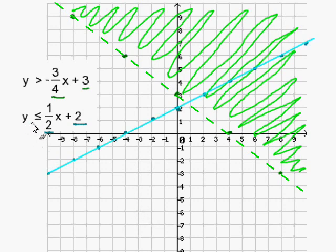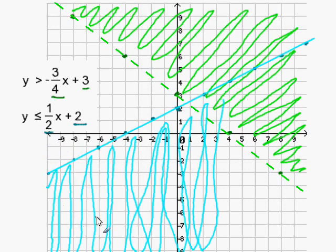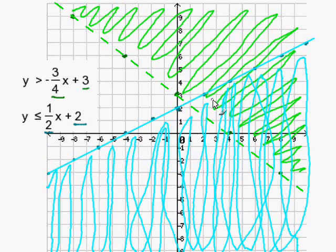Now this is y is less than or equal to. That means since y is less than or equal to, I have to shade at the bottom of the line. And now I've graphed my two inequalities, and this completes my problem.